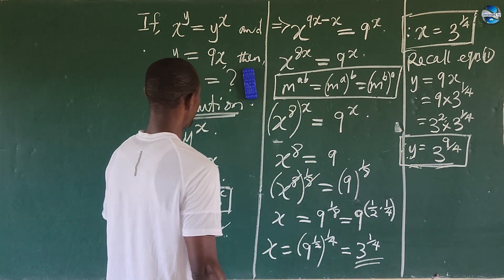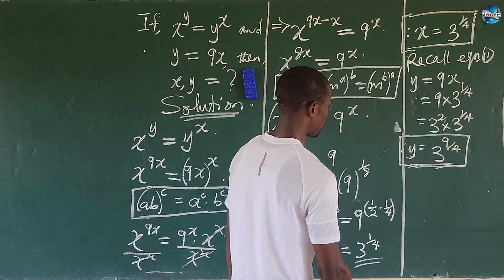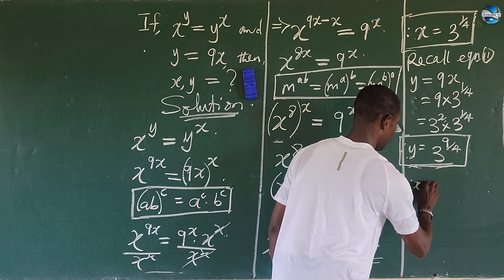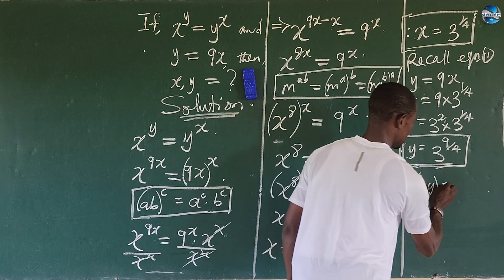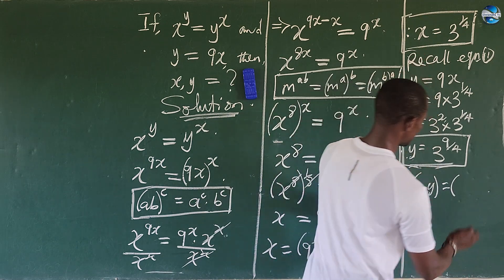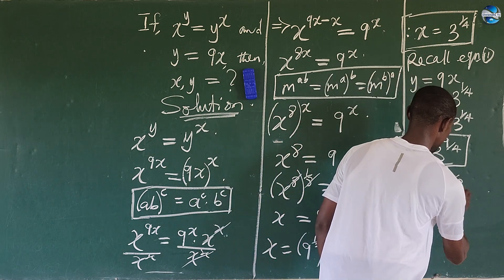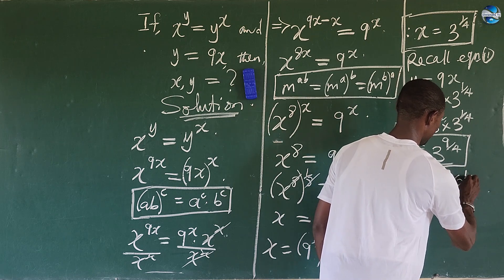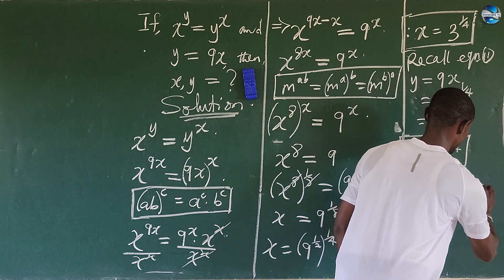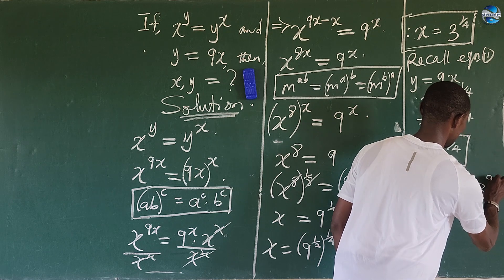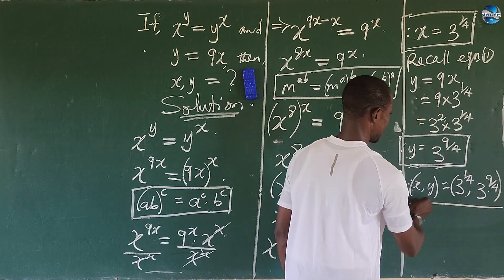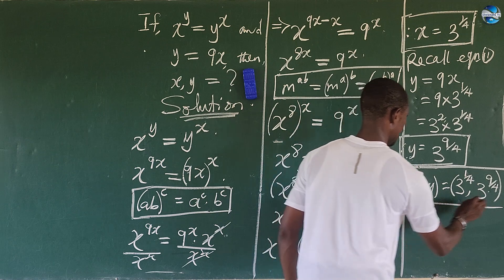So our final answers are: x equals 3 to the power of 1 over 4, and y equals 3 to the power of 9 over 4. Easy as ABC!